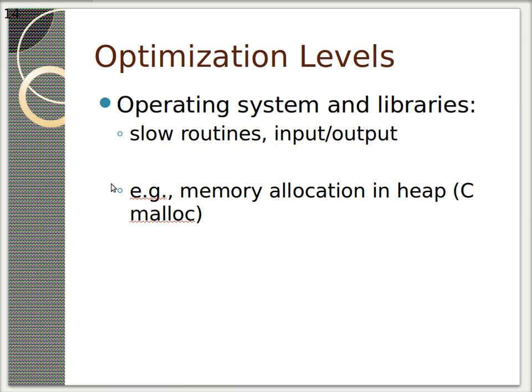Oftentimes the operating system can provide a service to you but it might not be very quick. For instance, I/O routines tend to be pretty slow especially because you're waiting on other kinds of hardware. Another kind of resource that tends to bog you down is memory allocation in the heap. On Intel CPUs, they tend to operate a lot quicker on the stack than they do on the heap. So not only is the heap a little slower but you also have to allocate it.